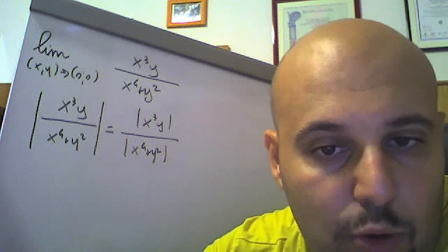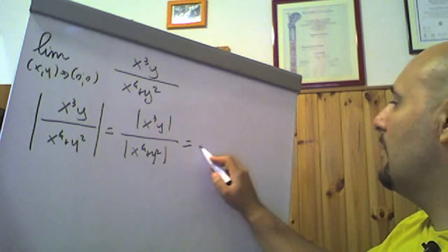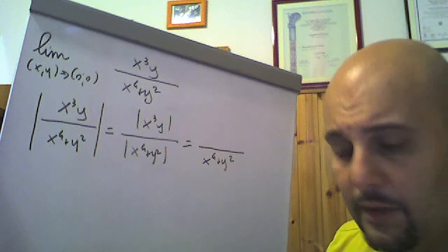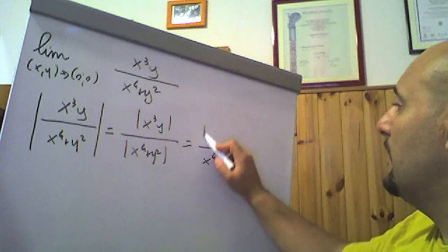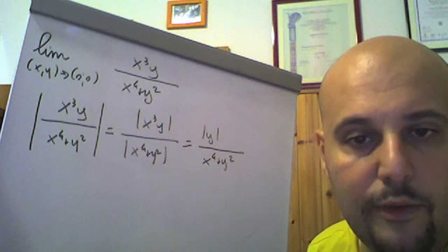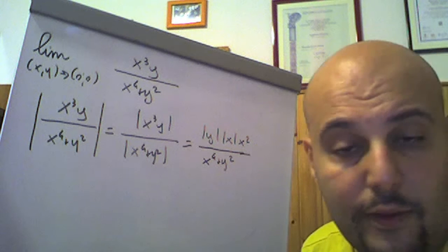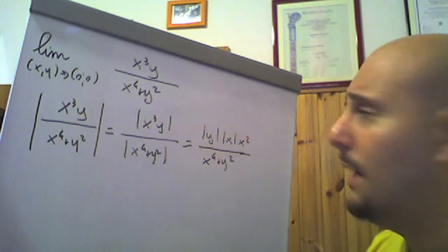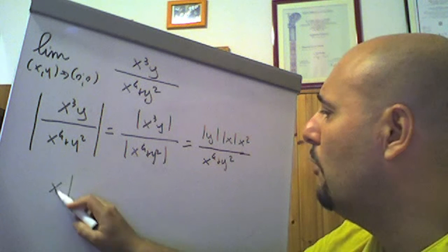The denominator x⁴ + y² is certainly positive because it is a sum of two non-negative quantities. Then, |x³y| = |y| · |x³| = |y| · |x| · x², since x² is always non-negative. We focus on the numerator: specifically on the term x² · |y|.